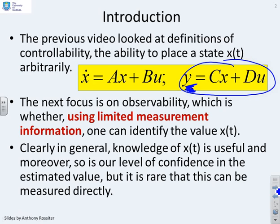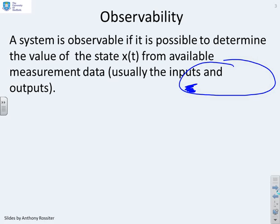So it's quite important to say how much can we infer about x of t from our measurements y of t. Observability then. A system is observable if it's possible to determine the value of the state x of t from the available measurement data.